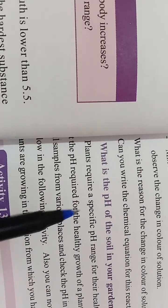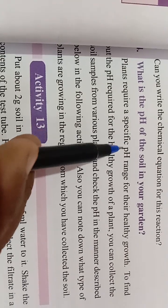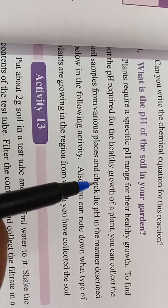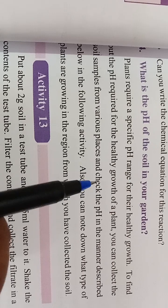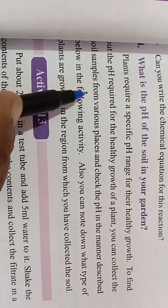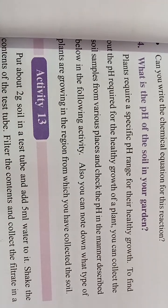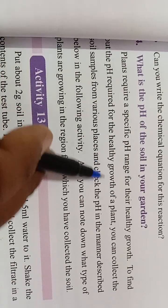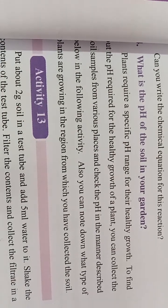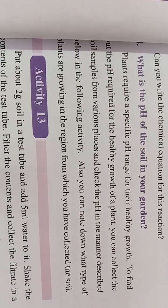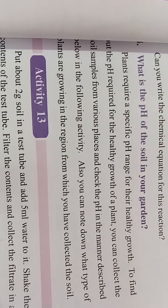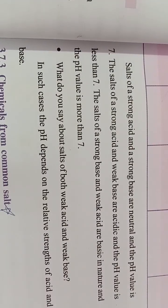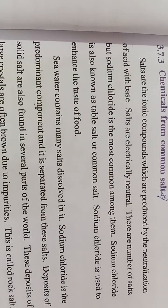Regarding the pH of soil: plants also grow only in a proper pH range. If the soil is too acidic or too basic, plants will not grow properly. A proper pH is required for the healthy growth of a plant. That is the importance of pH in everyday life.